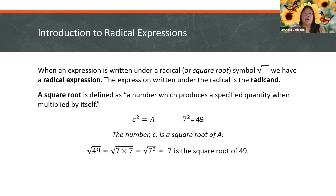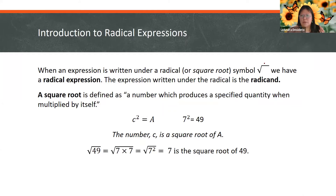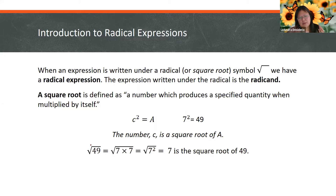So first: the introduction to radical expressions. When an expression is written under a radical sign — the square root symbol — we have what is known as a radical expression. The expression written underneath this symbol is called a radicand. For example, with the square root of 49, the radical is the bar that sits above 49, and 49 would be termed as our radicand. Any expression put under there — even something like 7 times 7 — is also defined as the radicand. It's anything under this radical bar.